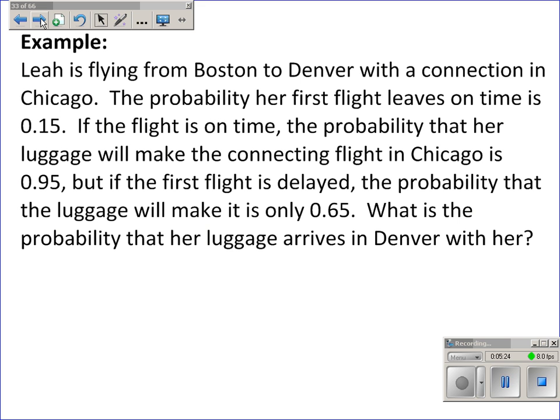Last question on tree diagrams that we're doing together. Leah is flying from Boston to Denver with a connection in Chicago. The probability her first flight leaves on time is 15% or 0.15. If the flight is on time, the probability that her luggage will make the connecting flight in Chicago is 0.95. But if the first flight is delayed, the probability that the luggage will make it is only 0.65. What is the probability that her luggage arrives in Denver with her?